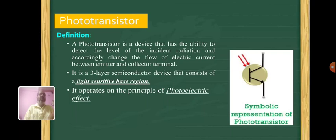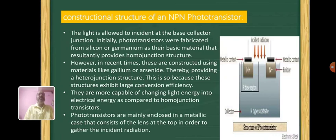This is the symbol of a phototransistor, the construction of NPN phototransistor. The light is allowed to incident on the base collector. The arrow is marked in this diagram. In that junction, the light is incident on the base.